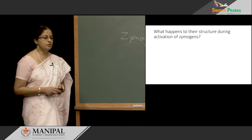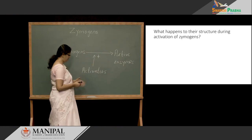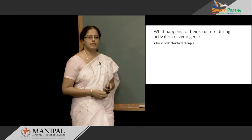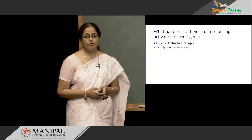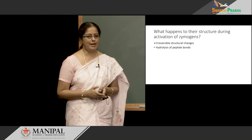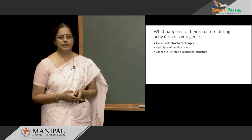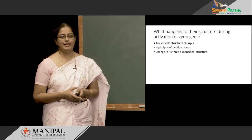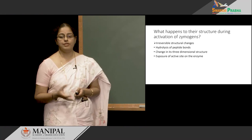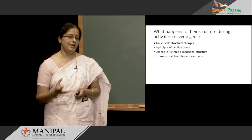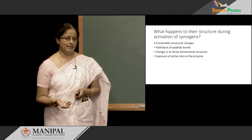Now, let us see what happens to the structure of Zymogens as they get activated to their active form. When Zymogens get activated, they undergo irreversible structural change. That involves hydrolysis of peptide bonds, which results in release of short peptides, also a change in the overall three-dimensional structure of the molecule, and that brings the active site of the enzyme to its surface, making the active enzyme truly active.